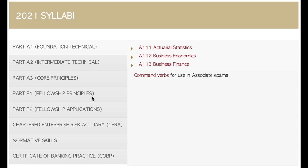Both associates and fellows will do the A exams. Your foundational technical exams are actuarial statistics, business economics, and business finance. For actuarial statistics I have a whole 13-hour course on Udemy called Mathematical Statistics that you can check out if you want to start your actuarial journey. It's very important that you have a solid maths background, and I've also got a Udemy course covering foundational mathematical topics — all links will be in the description.